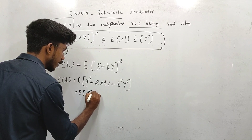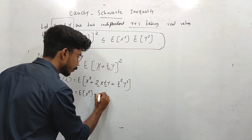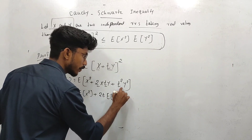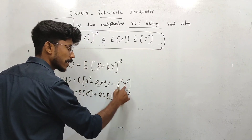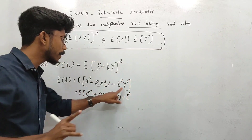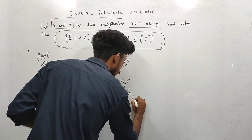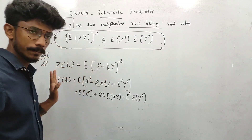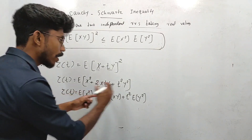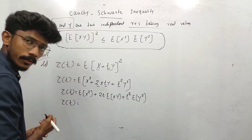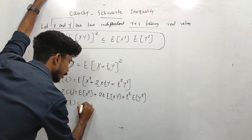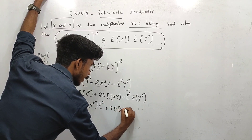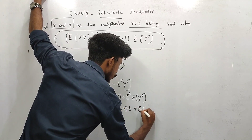So, expectation of X square plus 2t into expectation of XY plus t square into expectation of Y square. This is nothing but Z of t. So I will arrange this: Z of t equals expectation of Y square into t square plus 2 into expectation of XY into t plus expectation of X square.